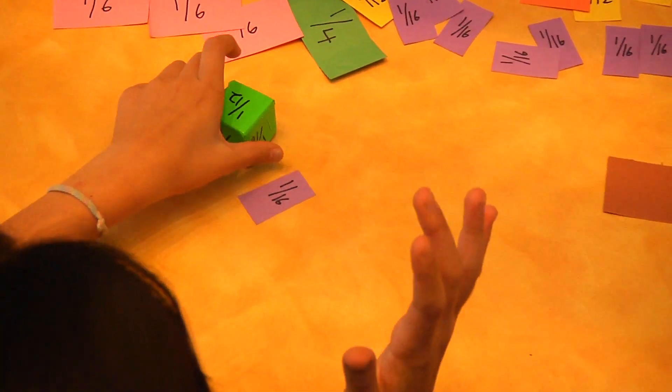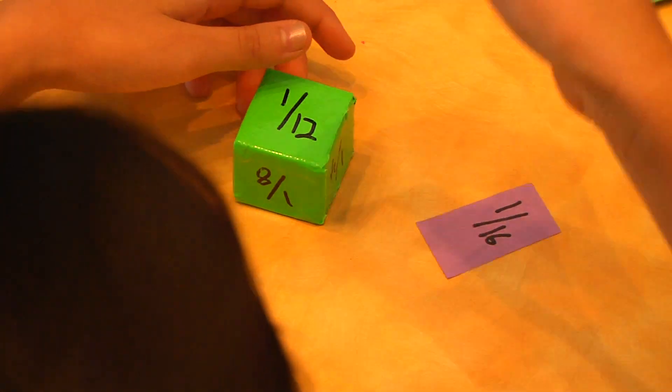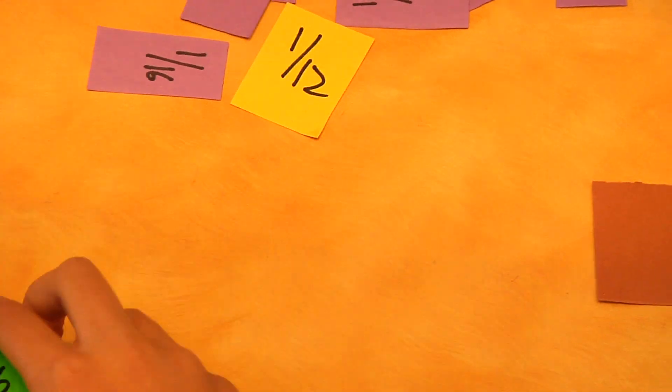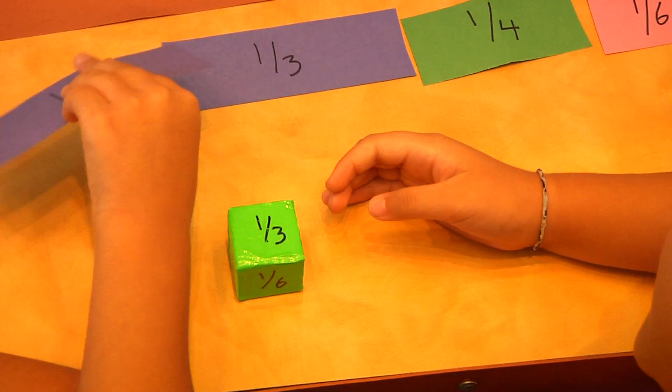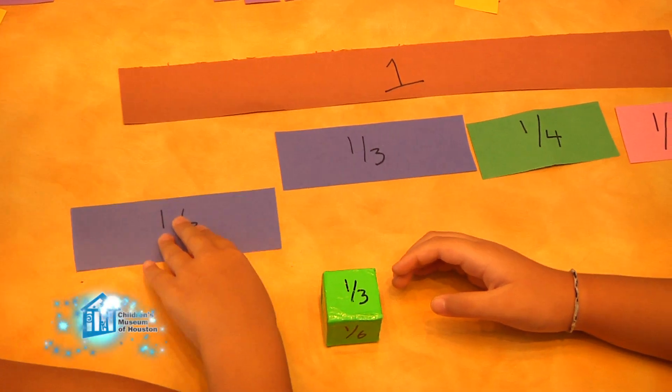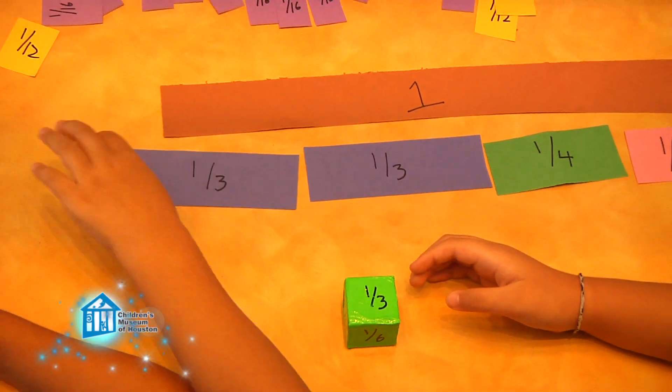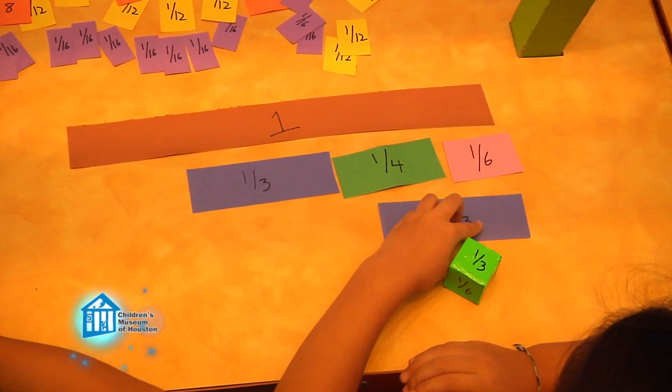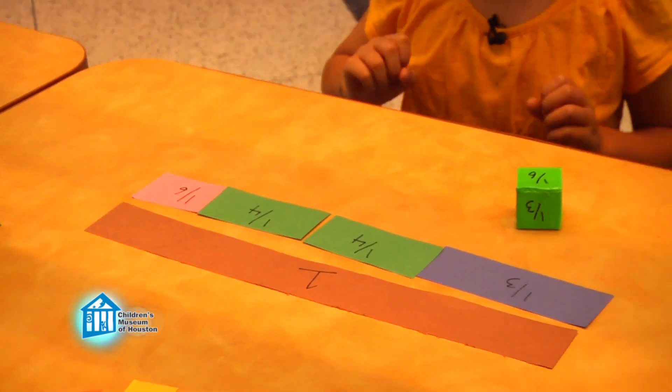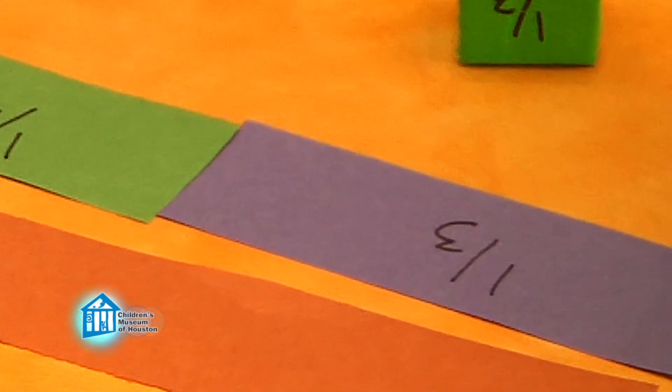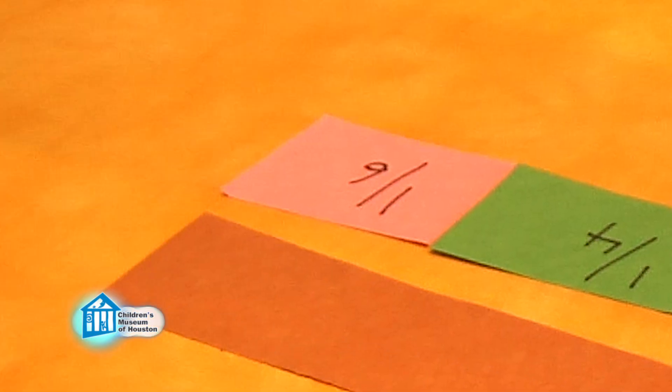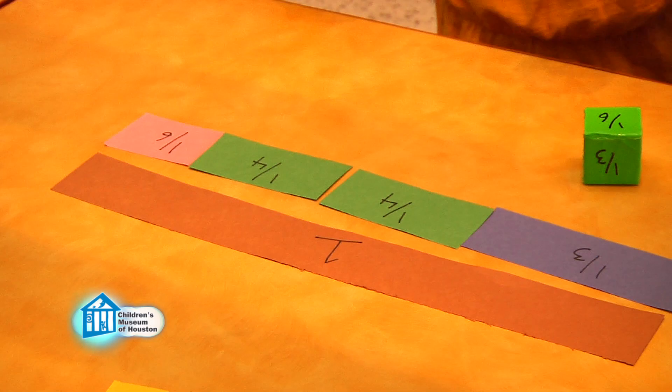Take turns rolling the die. Whatever fraction you roll, you take that piece from the deck. The first person to reach the equivalent of a whole without going over wins. If you roll a fraction that is too big to use on your current row, you can start a new row and play off both rows. I did it! One third and two fourths and one sixth is equivalent to a whole. I win!